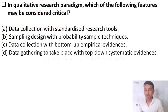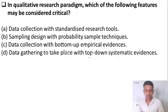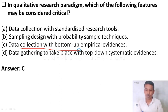In the qualitative research paradigm, which of the following features may be considered critical? Option A: data collection with standardized research tools. Option B: sampling design with probability sample techniques. Option C: data collection with bottom-up empirical evidences. Option D: data gathering with top-down systematic evidences. The right answer is Option C — data collection with bottom-up empirical evidences.